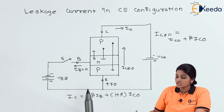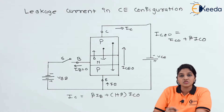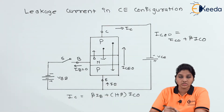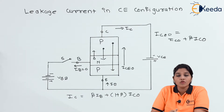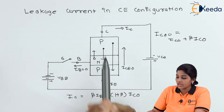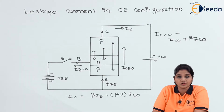When the emitter-base junction is forward biased and the collector-emitter junction is reverse biased, the holes start moving from the emitter to the base, and this constitutes the emitter current. The movement of holes causes the flow of current. In a PNP transistor, current flows due to the movement of holes and not because of the movement of electrons.